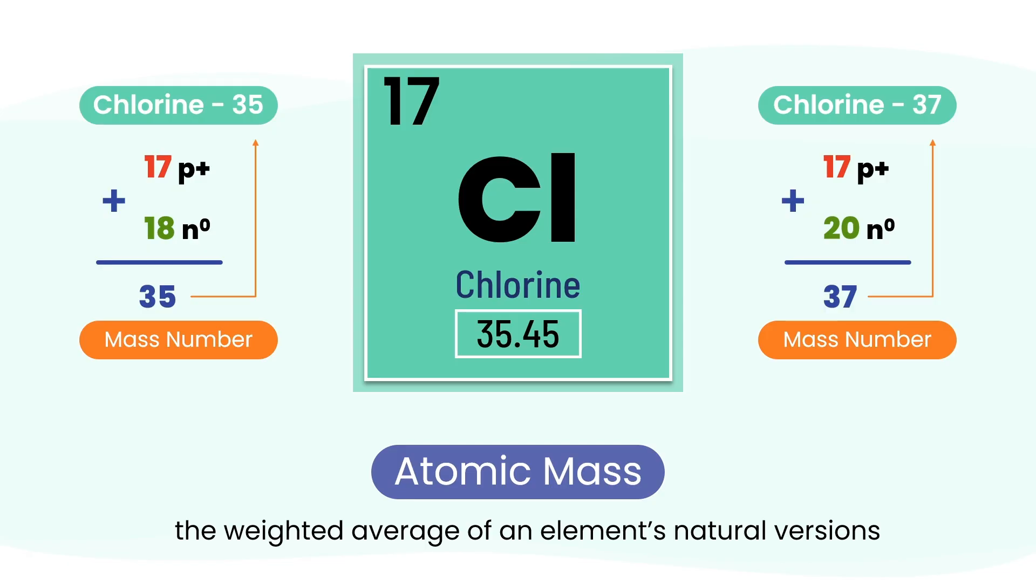Here's a helpful tip. If you round the atomic mass to the nearest whole number, you'll often get the mass number of the most common isotope. Since chlorine's atomic mass is around 35.5, and that's closer to 35 than 37, it means chlorine-35 is more abundant in nature.